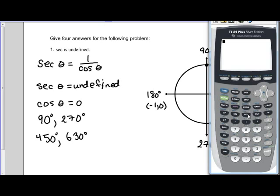So let's do the first one. Type in cosine of 90 degrees and we get zero. Cosine of 270 degrees, once again we get zero. Cosine of 450 degrees, zero. And cosine of 630 degrees, zero.